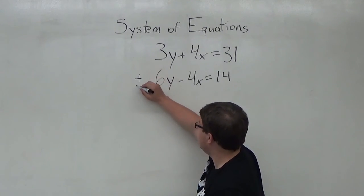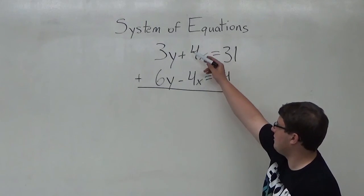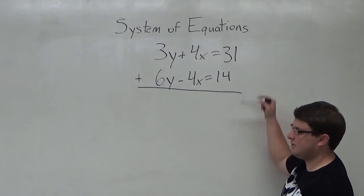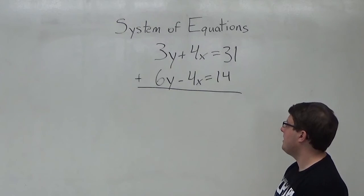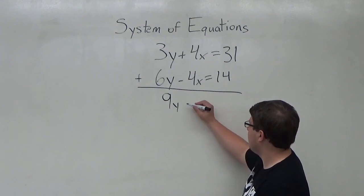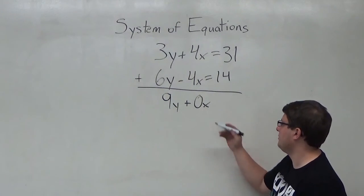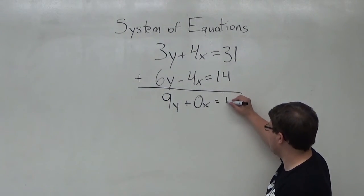So I'm going to add the two equations. I'm just going to add all the y terms, all the x terms, and all the normal numbers. So I'll get 9y plus 0x, which this is what we want—this is why we're using this method—equals 45.